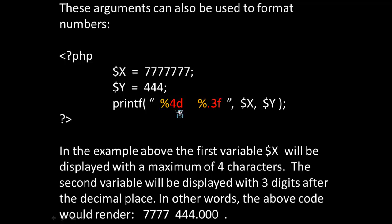The second formatting argument, indicated by the second percent symbol, has a dot, a 3, and an f. The dot means to the right of the decimal, display three digits of the number, and the f means it's a double. So to sum this up, in the example above the first variable x will be displayed with a maximum of four characters, and the second variable will be displayed with three digits after the decimal place. So x would be displayed as 7777, and y would be displayed as 444.000, three places to the right of the decimal.